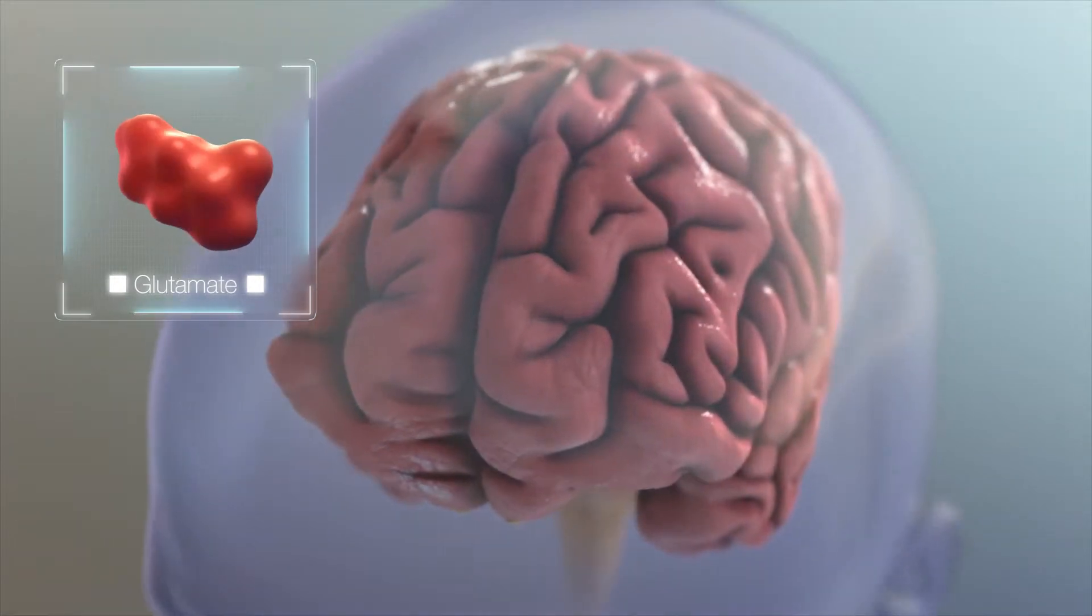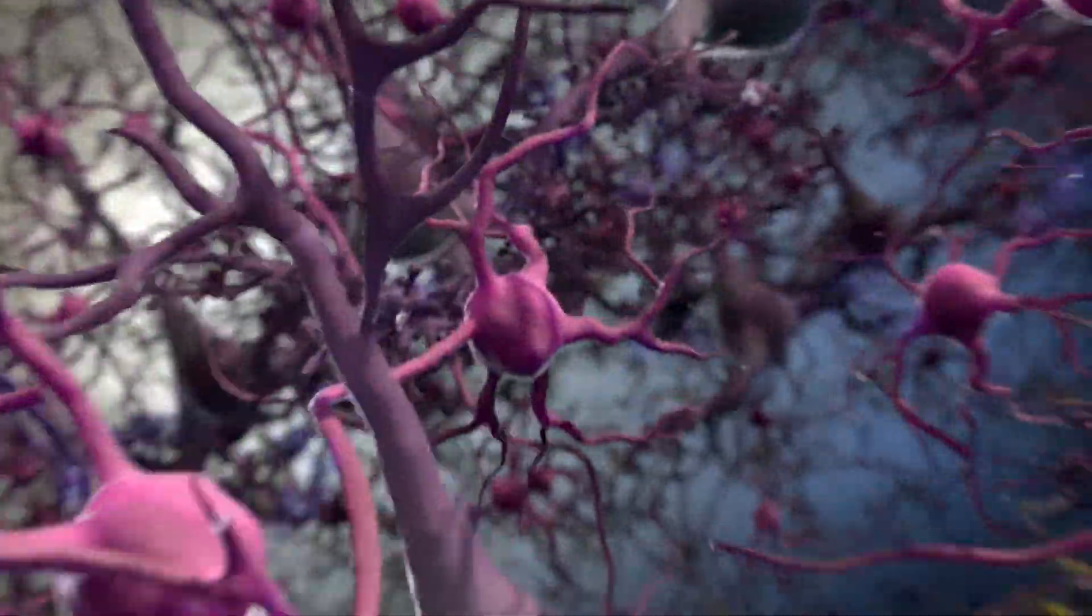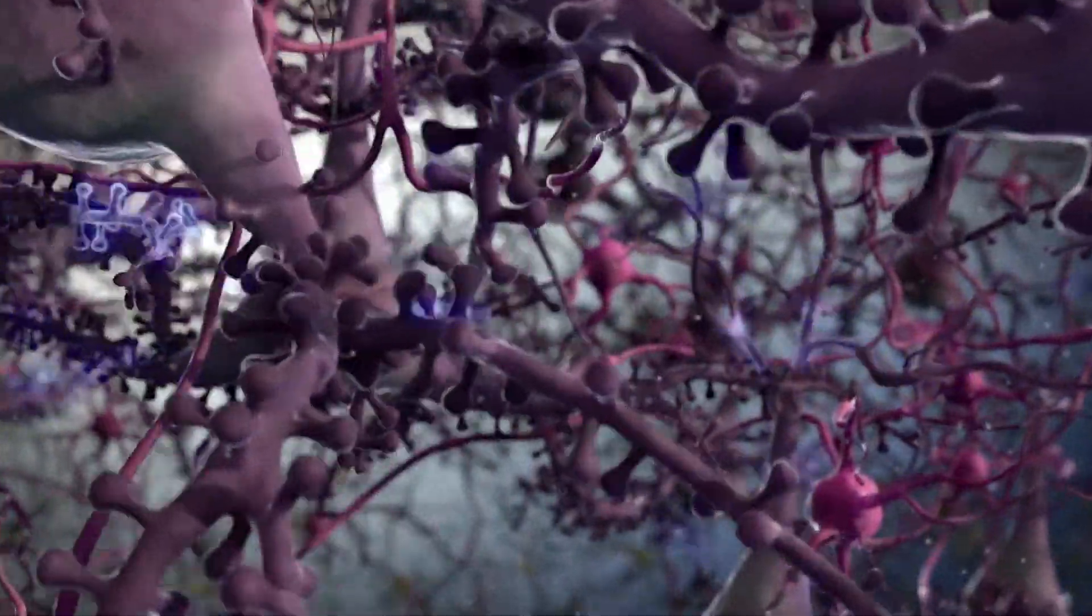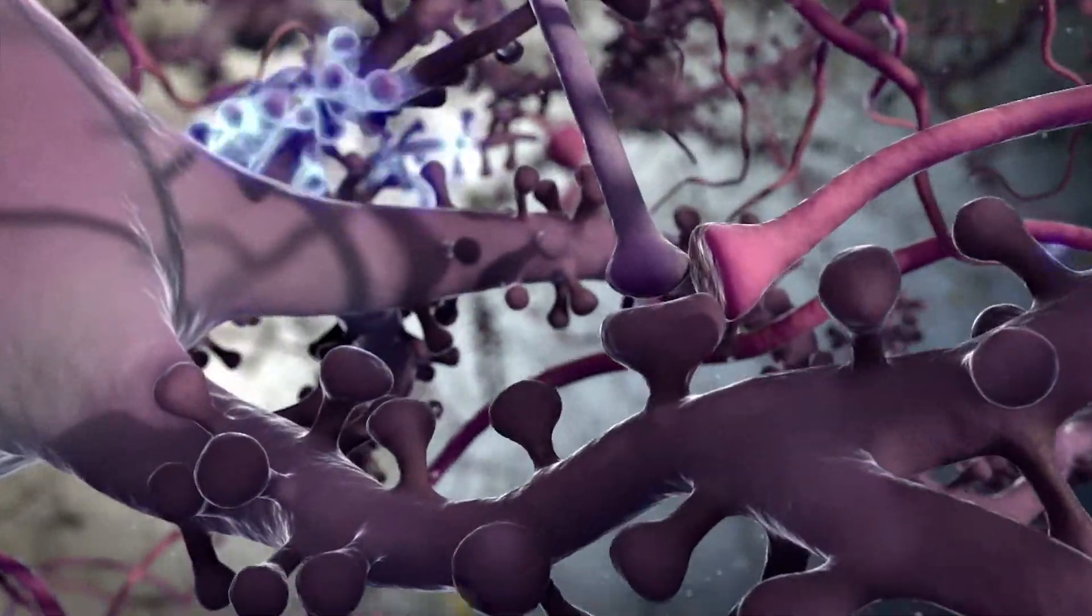Glutamate is the most abundant excitatory neurotransmitter in the brain. Release of glutamate is essential for normal function of neurons, but the levels of this neurotransmitter must be tightly regulated to avoid toxic effects on neurons.